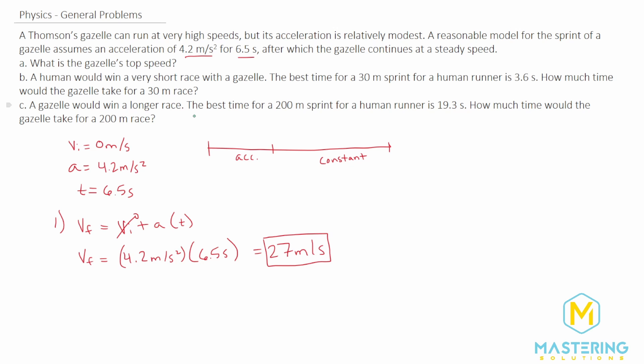For part two they tell us that a human would actually win in a really short race with a gazelle. The best time for a 30 meter sprint for a human is 3.6 seconds and how long would it take the gazelle to do the same race? So for two we'll be using x final equals x initial plus initial velocity times time plus one half the acceleration times the time squared. We're using this one because it has time in the equation and we have all the other variables that we need for this.